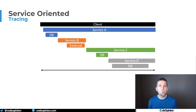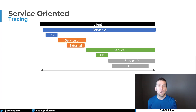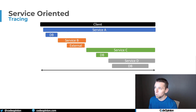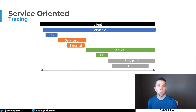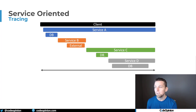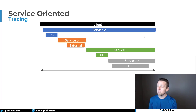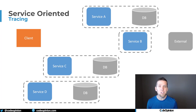With distributed tracing, we can visualize how an initial request flows through our system. Because all of this was done with blocking synchronous requests, when the client called service A, service A took the entire time to return. It made a database request, then called service B, which made an external call. Once done, it returned to service A, which called service C. Service C called its database and then service D, which interacted with its database. Service A's span covers the entire duration because all calls were synchronous and blocking.